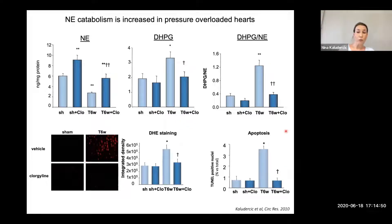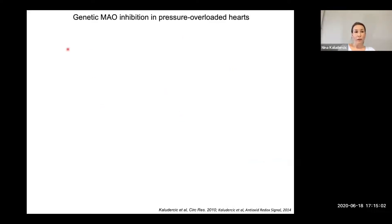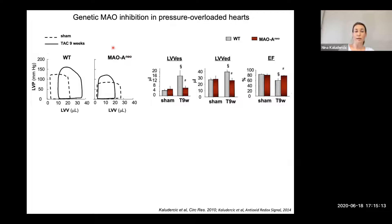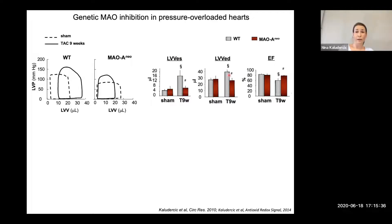This was accompanied by a reduction in the number of apoptotic cells in failing hearts. To confirm that pharmacological inhibition results are due to MAO inhibition and not non-specific effects, we also employed MAO-A mutant mice acting as dominant negative. We subjected them to pressure overload for up to nine weeks and performed pressure-volume loop relationships. We saw an increase in LV chamber volumes in systole and diastole, and cardiac function was decreased in failing mice, but not in the MAO-A mutant mice.